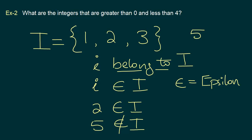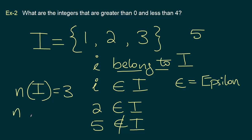There are 3 elements in set I, which are the numbers 1, 2, and 3. The count of elements we typically represent as n, then in brackets the set name. So we say the number of elements in set I is equal to 3. Similarly, the number of elements for our set D, which was the days in a week, would be 7.